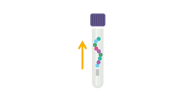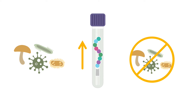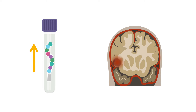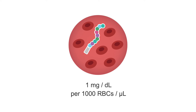Elevations in the CSF protein concentration can occur in both infectious and non-infectious conditions, including conditions associated with obstruction of cerebrospinal fluid flow. CSF protein can be elevated by a subarachnoid hemorrhage or a traumatic lumbar puncture. The presence of cerebrospinal fluid bleeding results in approximately 1 milligram of protein per deciliter for every 1,000 red blood cells present per microliter.